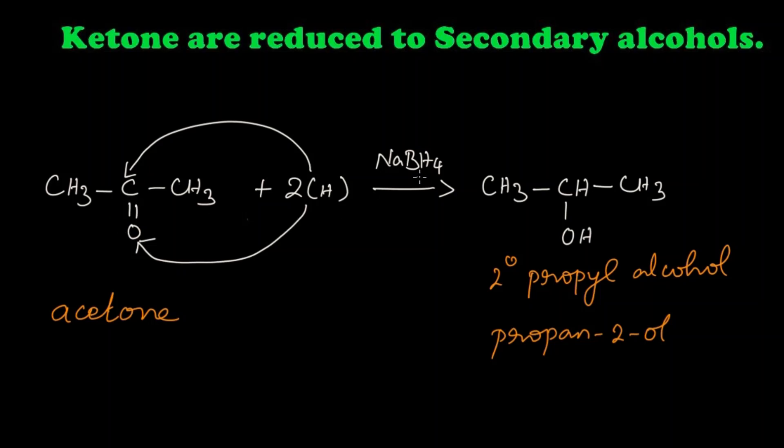Okay, let's summarize the reaction. When acetone, that is ketone, is reduced in presence of sodium borohydride, two hydrogens are added. One hydrogen will get attached to this carbon and another hydrogen to the oxygen, so we get secondary propyl alcohol, which is also known as propane-2-ol.